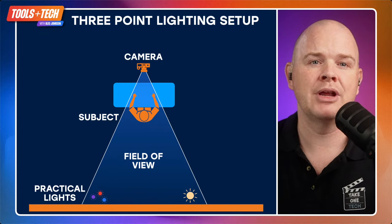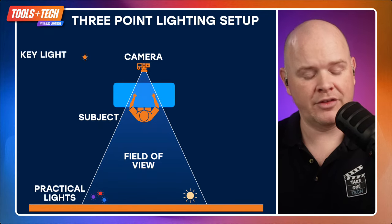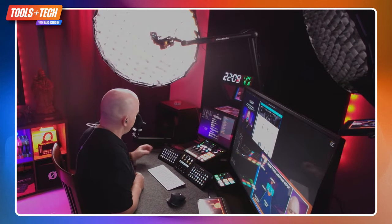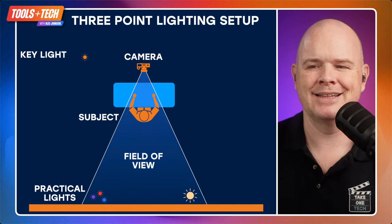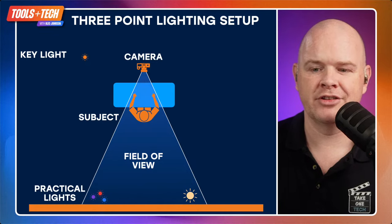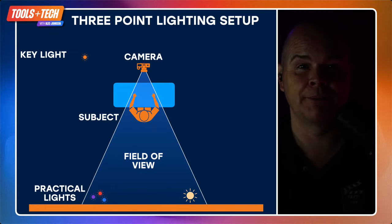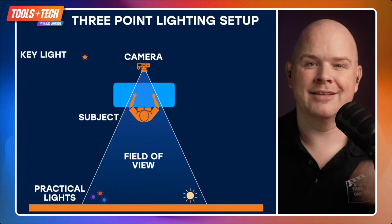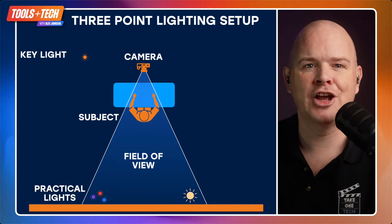The first of the three main lights is called the key light — that big light right in front of me. Its purpose is to basically be the primary source of light. I'm going to switch out some of my lights now and build them up so you can see what's going on. I'm now completely in the dark, but if I switch on my key light, you'll see it's providing the majority of light onto my face.